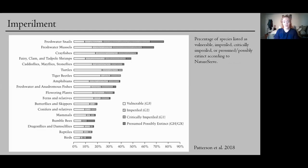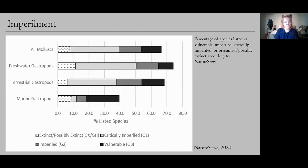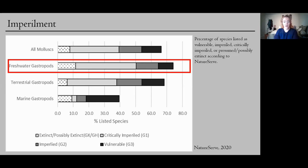But unfortunately, despite the fact that they are really important and really interesting and diverse, they're actually some of the most imperiled and at-risk organisms that we have in North America. So this graph just shows you a breakdown of the percentage of species listed as vulnerable, imperiled, critically imperiled, or presumed possibly extinct. And freshwater snails and freshwater mussels have the highest percentage of species listed as at-risk compared to all other taxonomic groups. And then if we break it down a little bit further to look more closely at the freshwater gastropods that I study, they're actually disproportionately at risk of extinction. They've had way more extinctions compared to all molluscs as well as their terrestrial and marine gastropod counterparts. And over 70% of North American freshwater gastropod species are considered at risk.